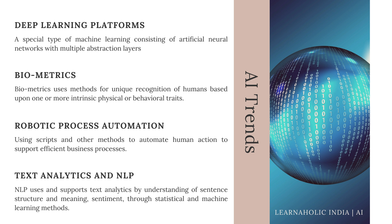Robotic Process Automation is currently used where it is inefficient for humans to execute a task. The next technology is text analytics and natural language processing. NLP uses and supports text analytics by facilitating the understanding of sentence structure and meaning, sentiment and intent through statistical and machine learning methods. It is currently used in fraud detection, security, automated assistance, and applications for mining unstructured data.